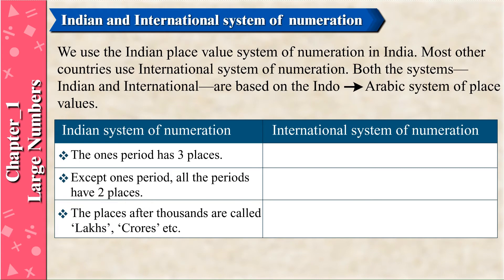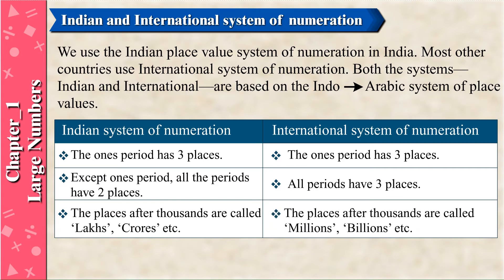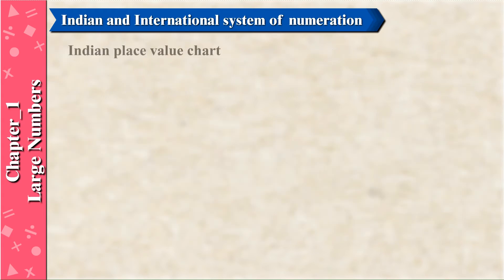In the Indian system, the places after thousands are called lakhs, crores, etc. In the International system, the ones period has three places and all periods have three places. The places after thousands are called millions, billions, etc.